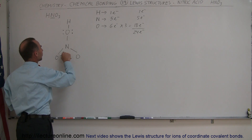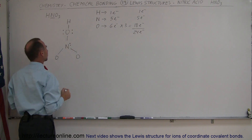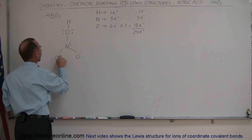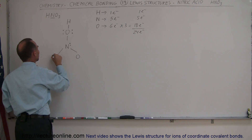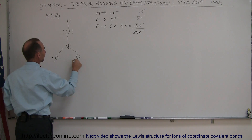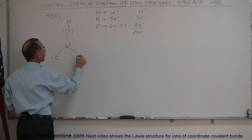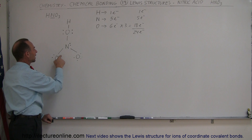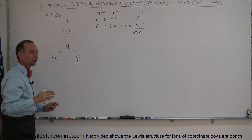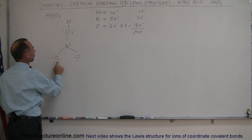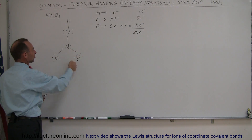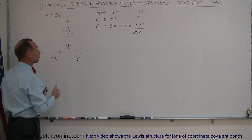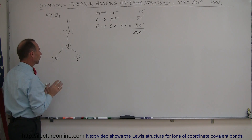Nitrogen has three bonds here, so three of its five electrons are used — it should have two more electrons. The other two oxygens, each having used one electron for bonding with nitrogen, should each have five electrons left. But notice that they did not satisfy the octet rule — that is a problem. So what's going to happen is that one of them is going to make another bond with nitrogen, a double bond, so that it follows the octet rule.